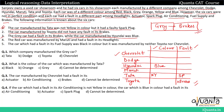The fourth point is the red car was manufactured by Maruti and had a fault in its headlights. So Maruti is red in color and had a fault in headlights.